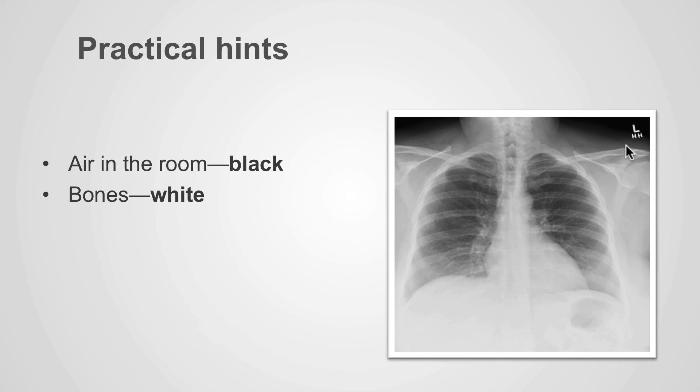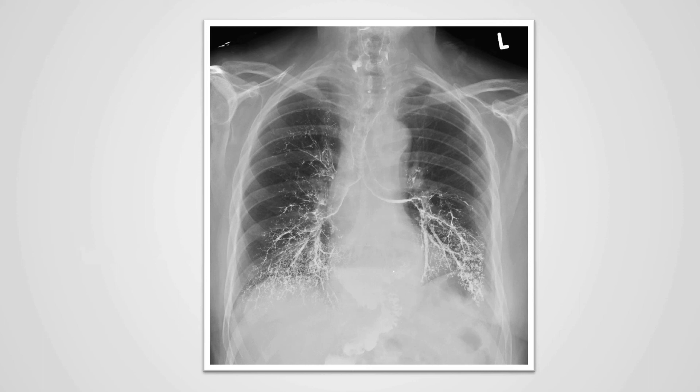We can identify the clavicles and the scapula which are very white. The heart and soft tissues which we can identify readily within the central portion of the x-ray are gray and the markers that are used to identify the location of the patient here in the left upper corner are very white because they're made of lead.